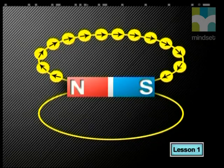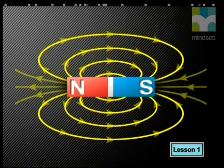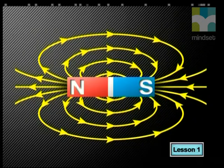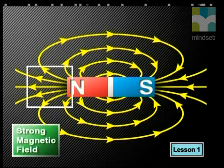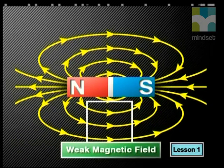Did you notice that the plotting compasses form the same shape around the magnet as the iron filings do? The shape and size of the magnetic field can be represented on paper as a diagram. To show this magnetic force field, we draw field lines around the bar magnet. We show the direction of the field as going from the North Pole of the magnet to the South Pole, using arrows to show the direction of the force on the free-moving compass needles. Remember that field lines never cross each other. Where there are many field lines close together the magnetic field is strong, and where the field lines are far apart the magnetic field is weaker.